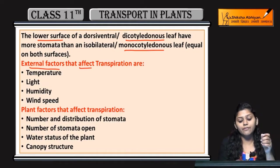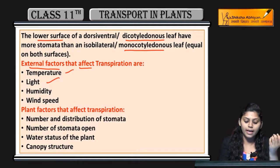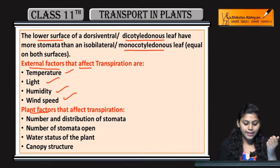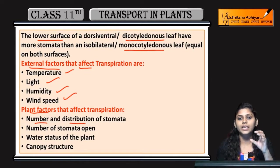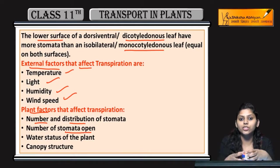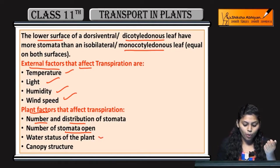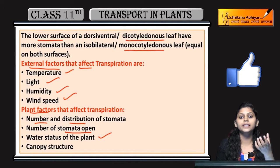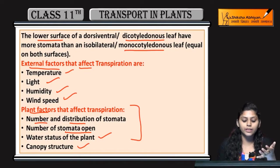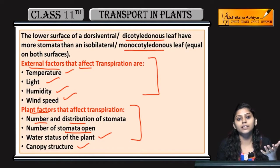Jo external factors hain that affect transpiration rate — temperature, light, humidity, and wind ki speed. Kuch plant ki factors hain jo affect karti hain transpiration — woh kya kya hain: number and distribution of stomata, leaves mein kitne stomata hain aur kahan distributed hain upper surface pe ya lower surface pe, number of stomata open, gases exchange aur water exchange kar raha hai, water status of the plant, aur canopy structure of the plant.